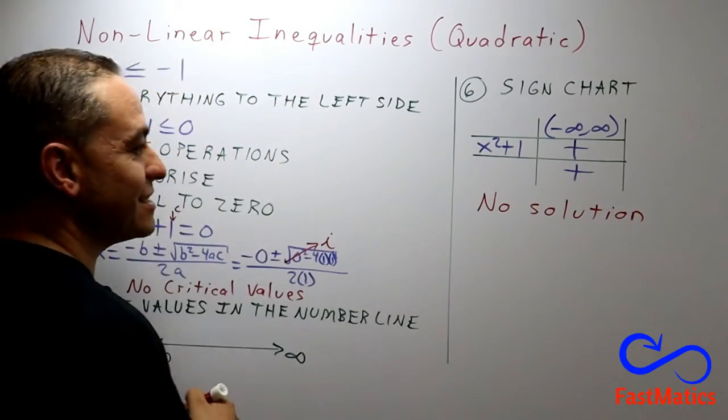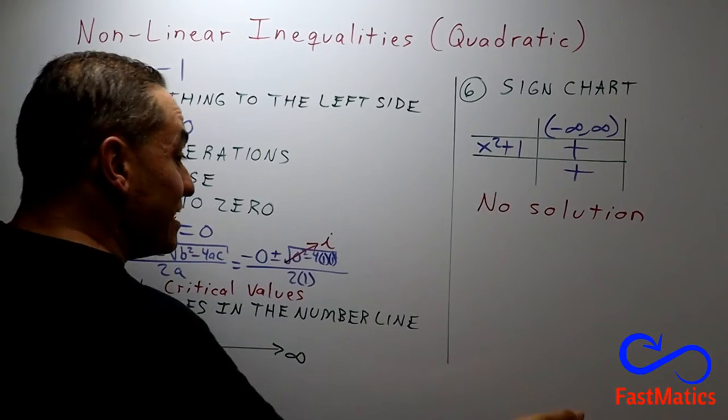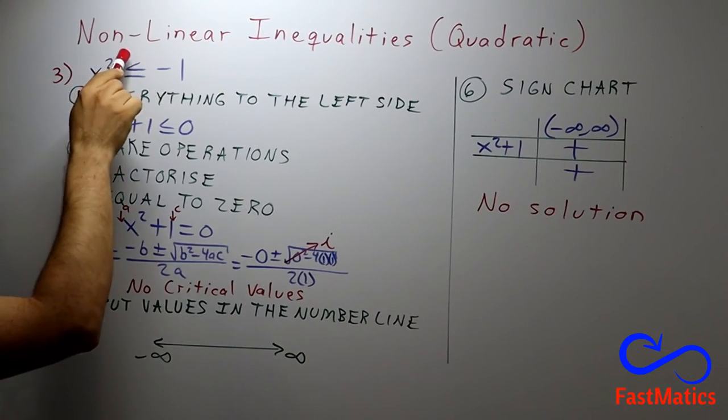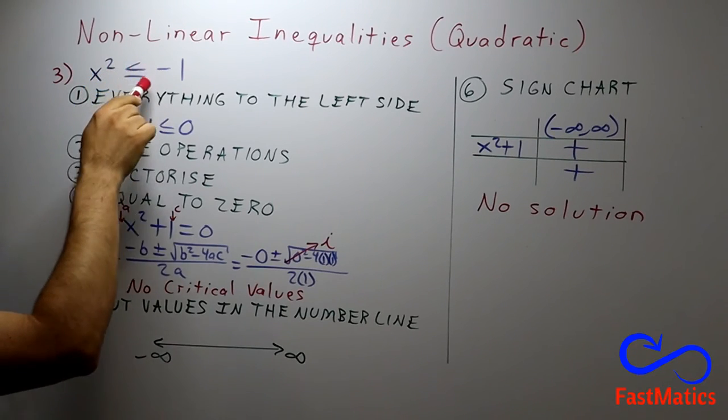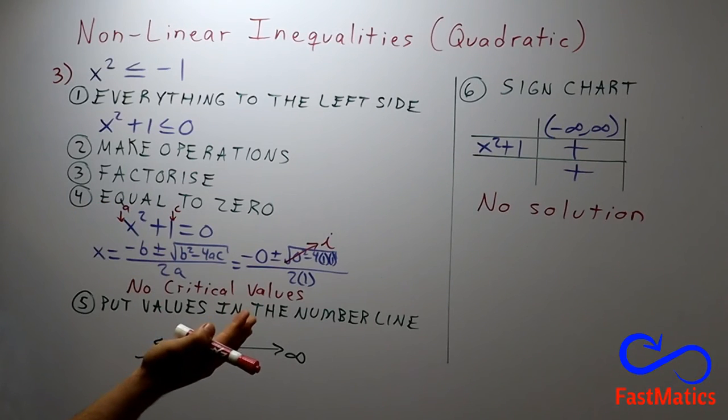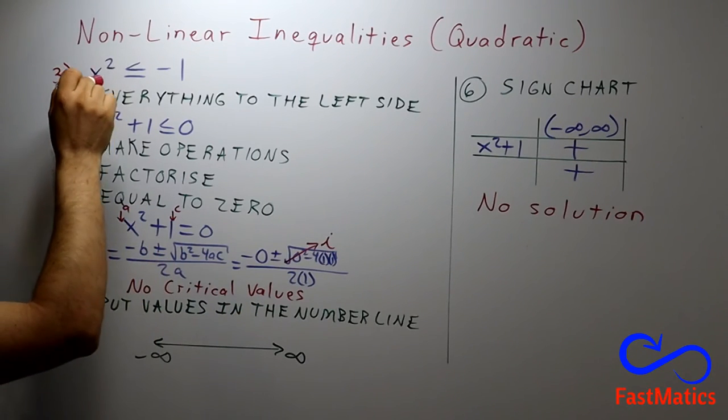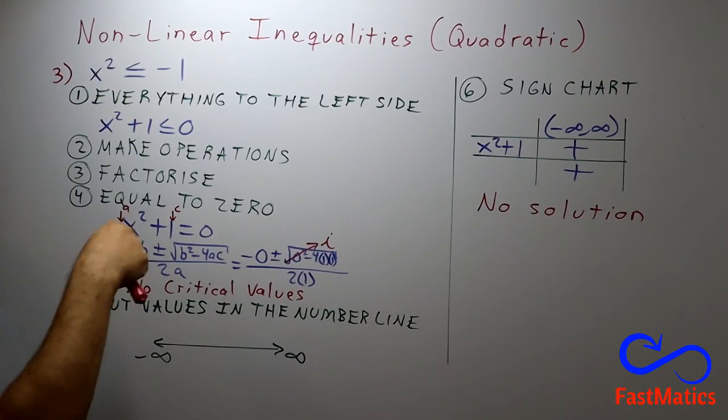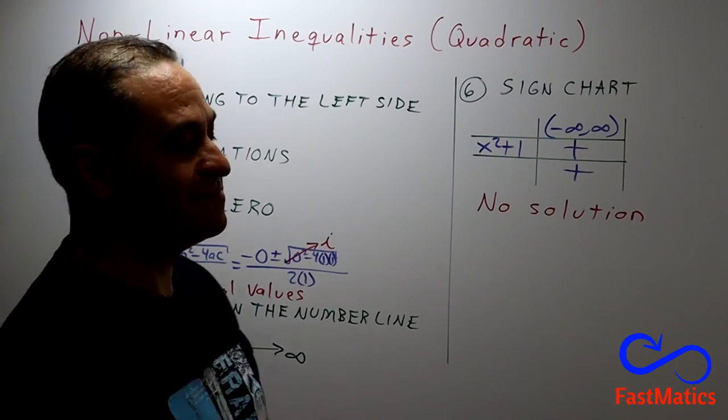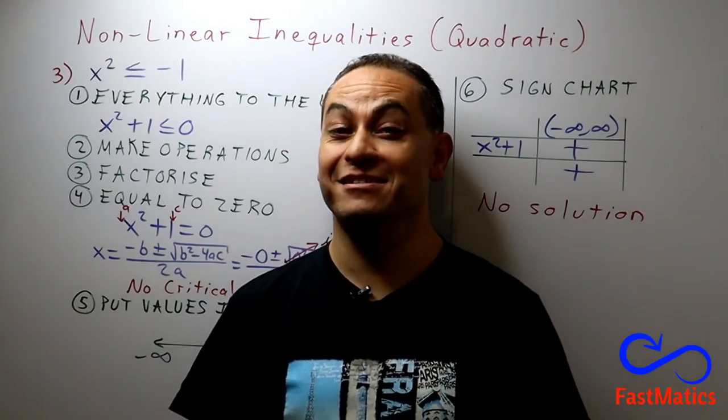And that's it. That means you will never find a number that squared will be less than or equal to negative 1. And it is logical. Because, any number squared will give you always a positive answer. If it is negative, if it is positive, no matter. So, here, this is the exercise.